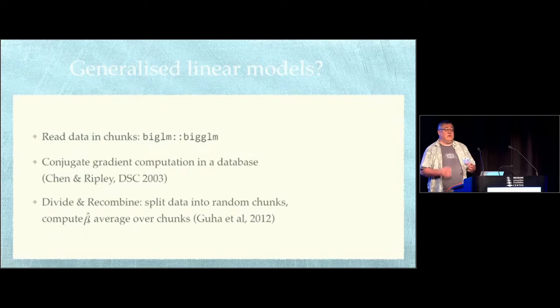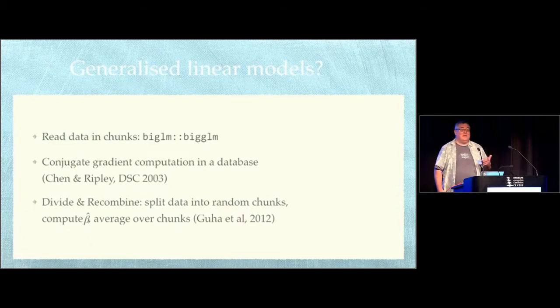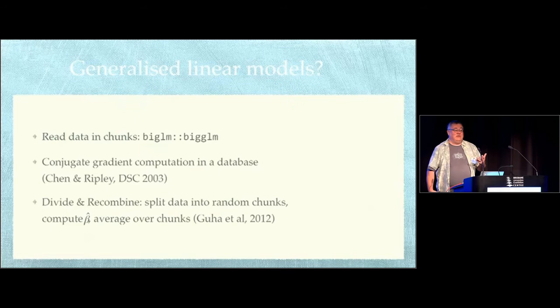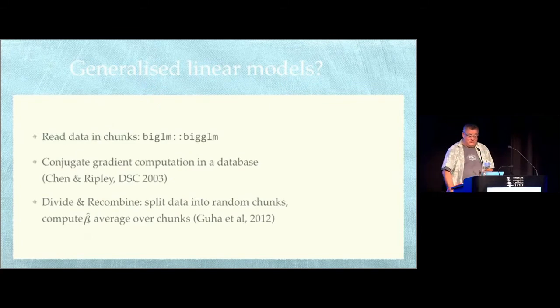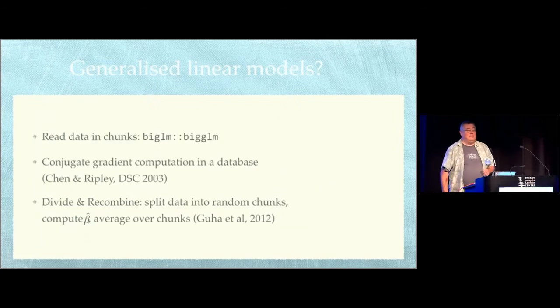You could do all the computations in a database. So Fei Chen and Brian Ripley, at an early version of a conference like this, talked about an approach to using a conjugate gradient optimization algorithm with all the data in Postgres. Or you could just split the data into random chunks, fit the model to each chunk and average the results, the divide and recombine approach. The author, you probably recognize the senior author on that paper, Bill Cleveland.